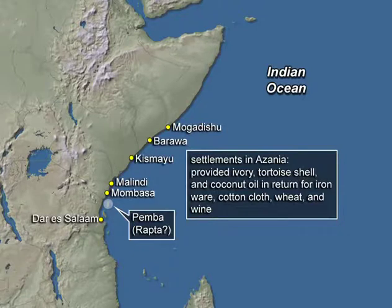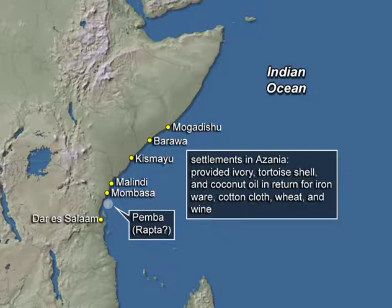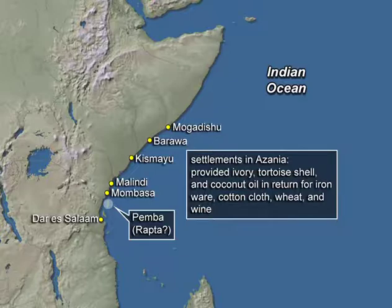A series of small settlements along what the Greeks called Azania, along the coast, provided ivory, tortoise shell, and coconut oil in return for ironware, cotton cloth, wheat, and wine. The southernmost of these settlements mentioned in the Periplus was called Rapta. Its exact location remains a little unclear — some suggest it was the island of Pemba off the northern part of today's Tanzania; others locate it closer to modern-day Dar es Salaam. It gives an idea of how far south familiarity reflected in that document extended.